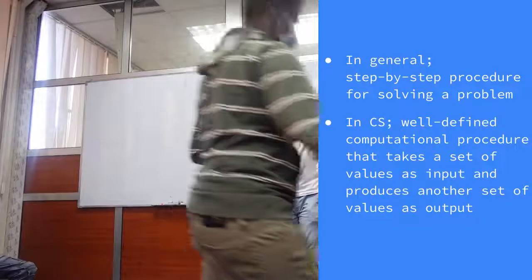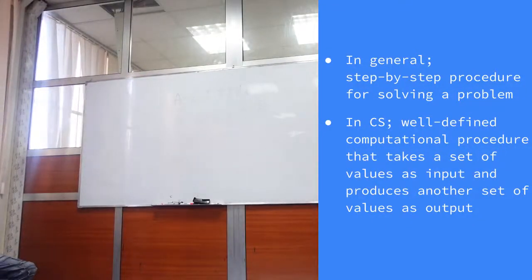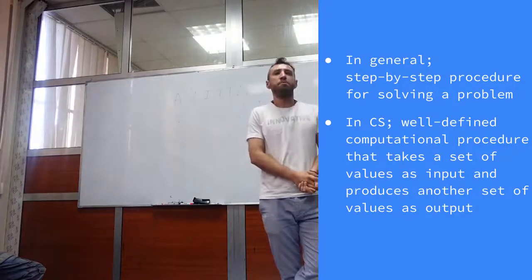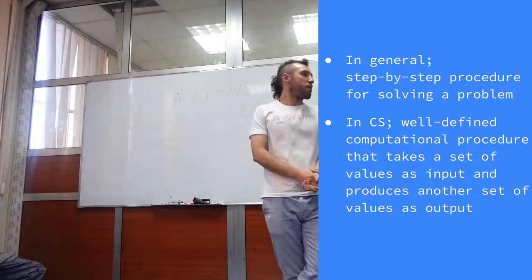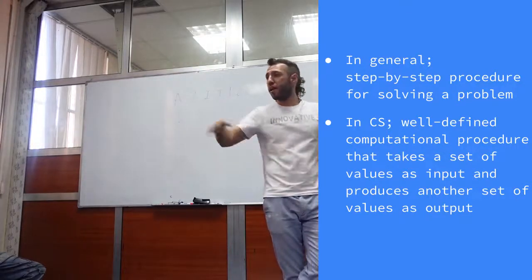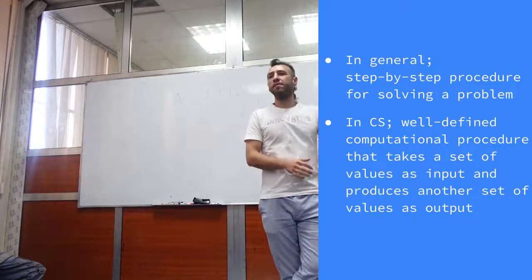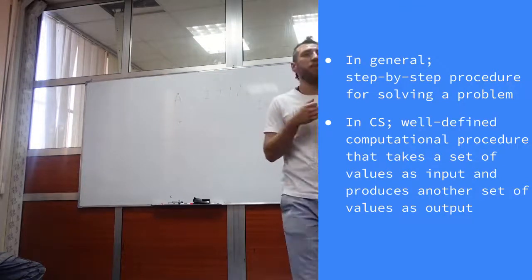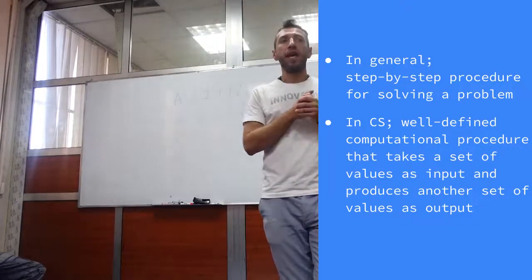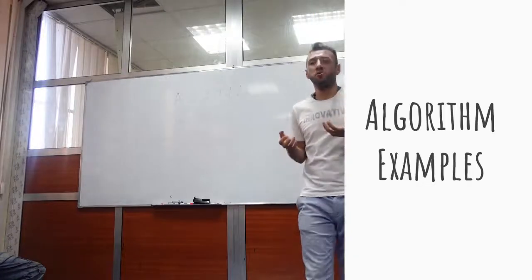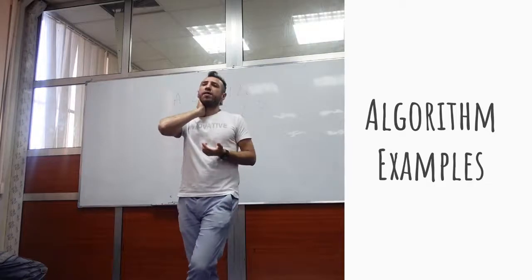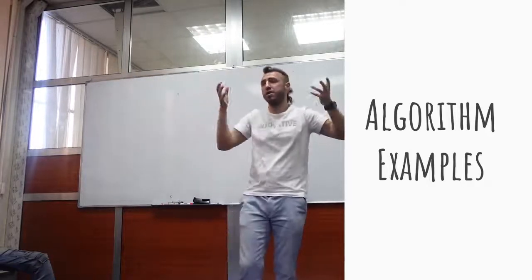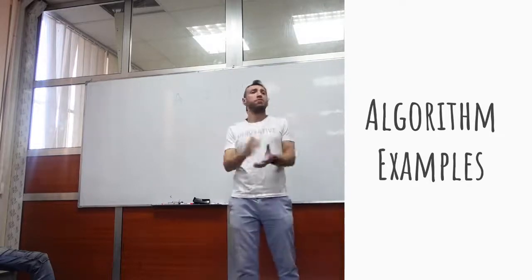So let's get started. What is an algorithm in general? In general, an algorithm is a step-by-step procedure for solving a problem. It doesn't really have to be a computer science problem. For example, cleaning this lab can be a problem, and the step-by-step procedure can be: first go around, collect all the bottles of water, put them in a bag and leave the lab. This can be an algorithm. In computer science, the definition is a well-defined computational procedure that takes a set of values as input and produces another set of values as output. Can anybody give an example for an algorithm?